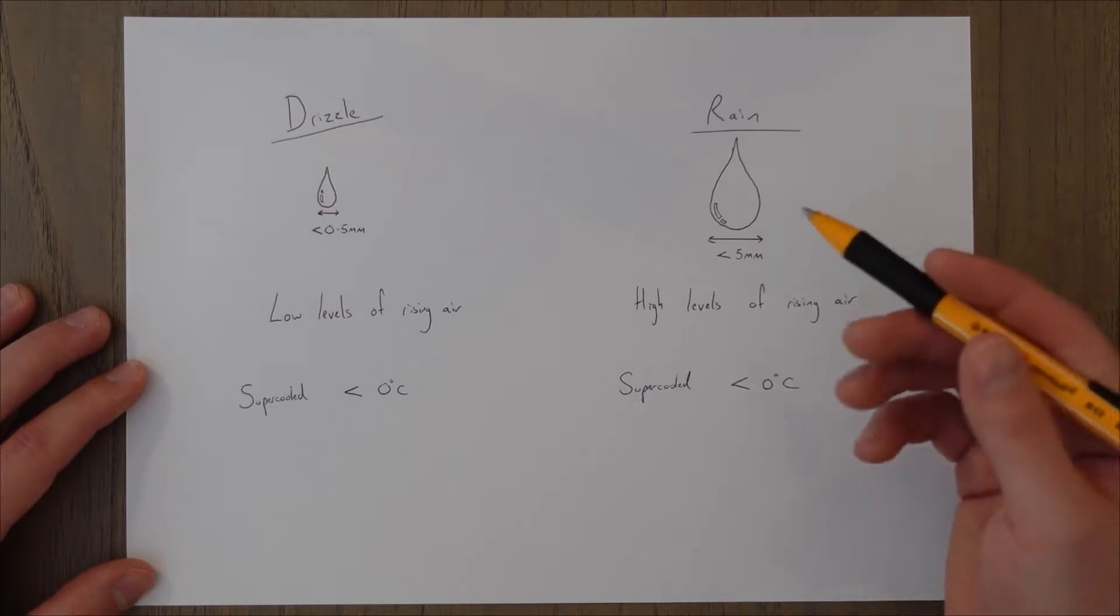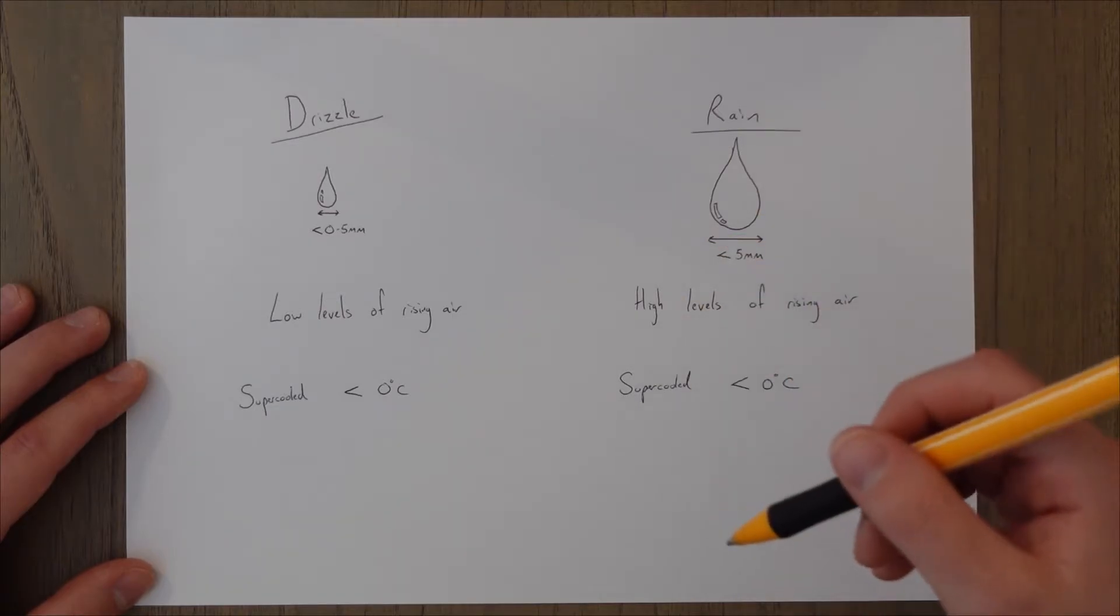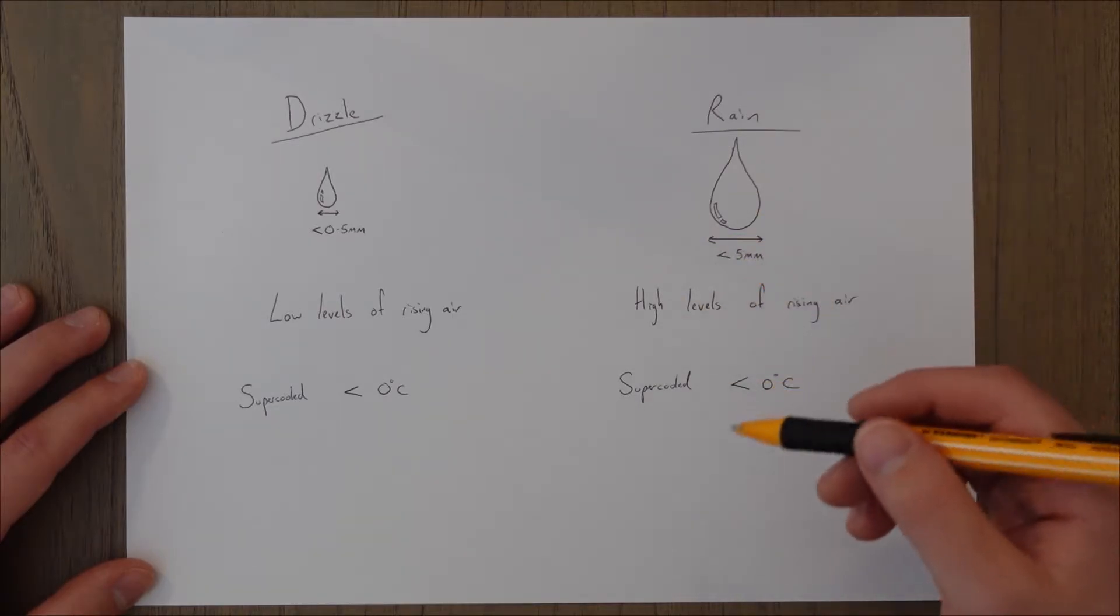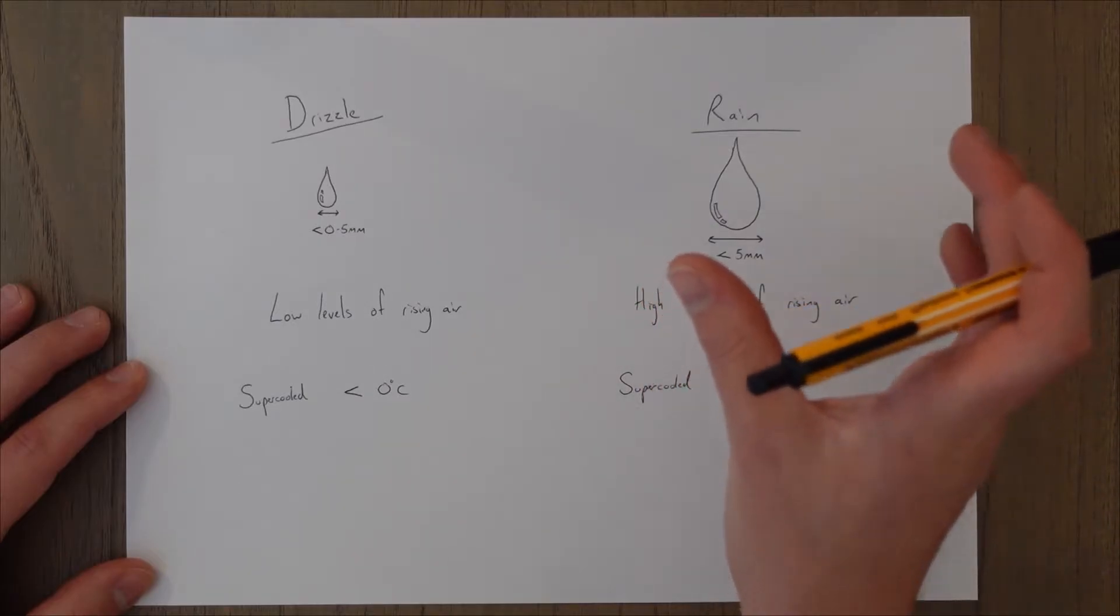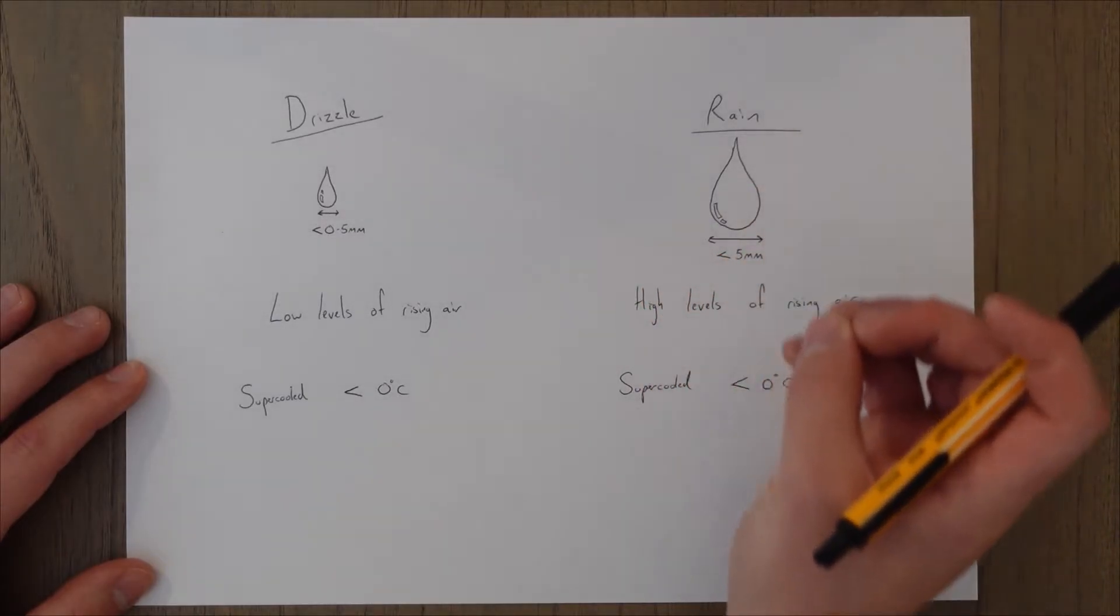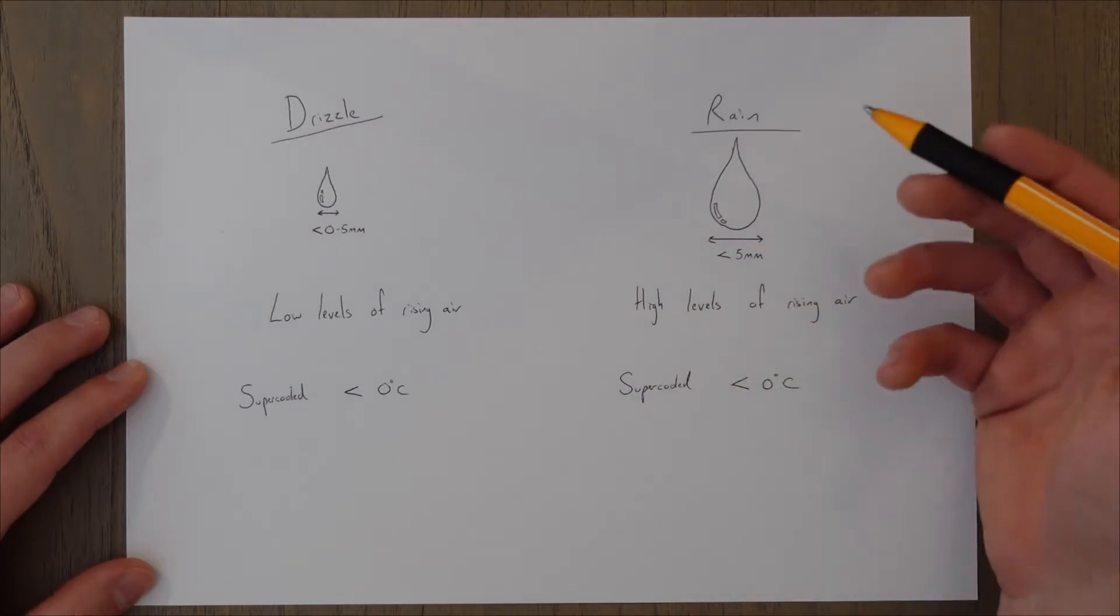Generally speaking the more intense the upward motion of the air the more updrafts the more rising air that we have the bigger the droplets need to grow in order to be pulled down to the earth by the gravity and overcome that rising air.